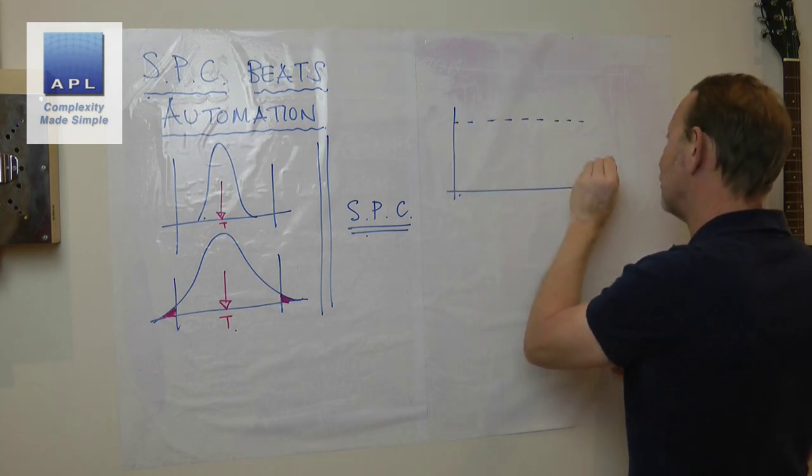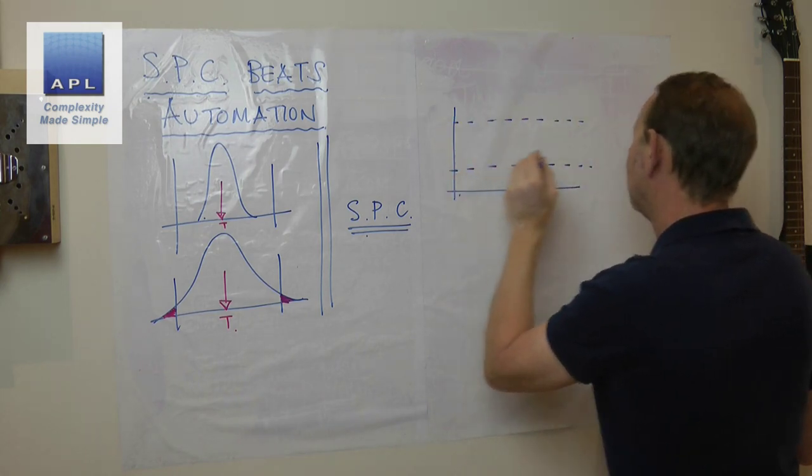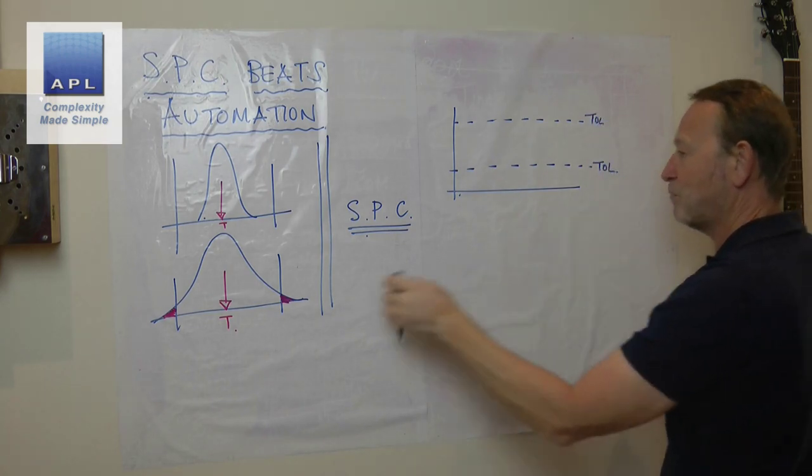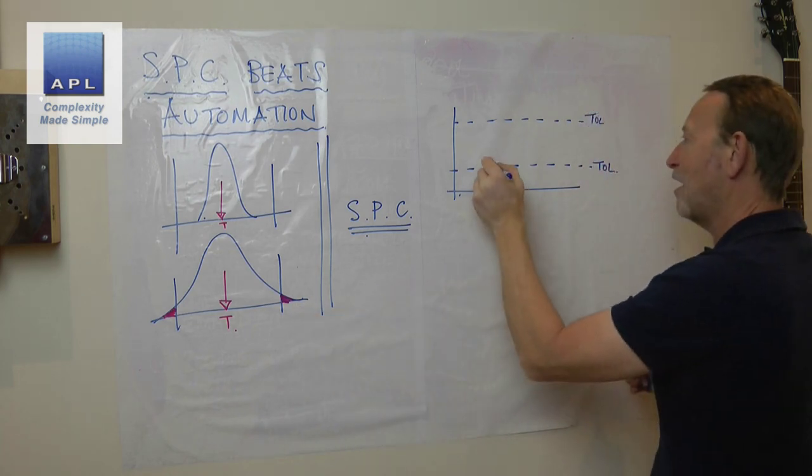Because if you don't use SPC, what they will do is this: they will take the tolerances—this is the upper tolerance, this is the lower tolerance—especially in this case here.